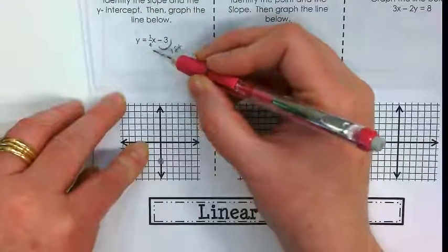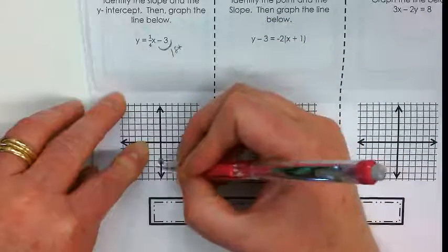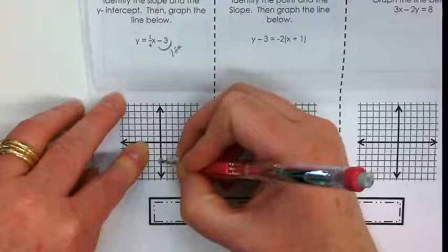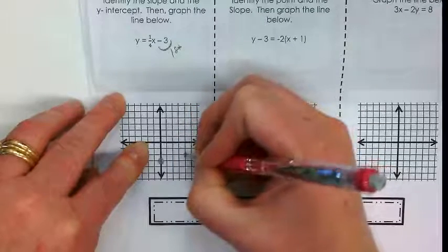The other thing we know is that the slope is 1 over 4. That means every point has a place where it rises up 1 and it runs over 4. So if I rise up 1 and run over 4, I get a second point.